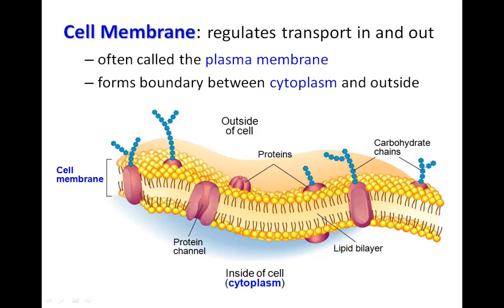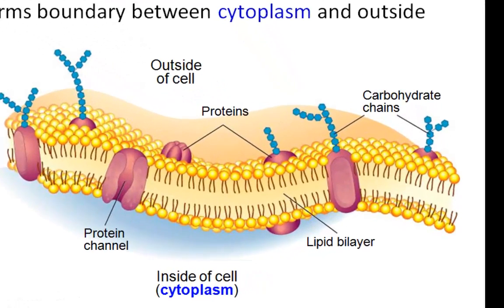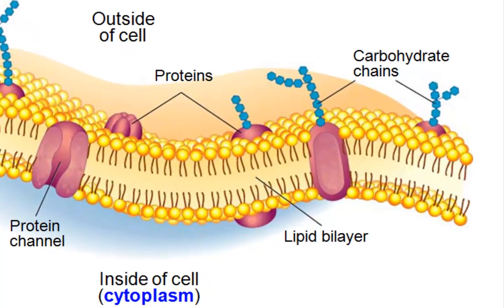One of the most important membranes to discuss is the cell membrane. You'll often hear this referred to as the plasma membrane, and its chief function is to regulate and control what goes in and out of the cell. So it's clear that it would form a boundary between the outside of the cell and the inside. The inside is referred to as the cytoplasm. You'll also notice that here we have a double layer of lipids, which is called a lipid bilayer.